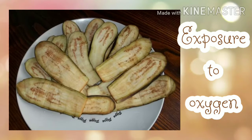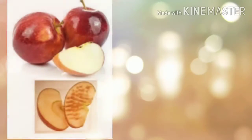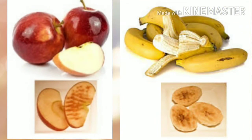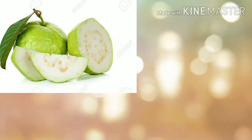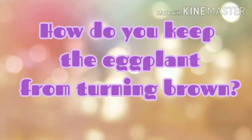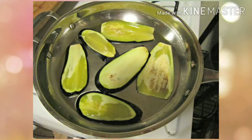The same phenomenon could also be observed in potato, apple, banana, guava, and other fruits and vegetables. How do you keep the eggplant from turning brown? Place it in a large bowl of water with a teaspoon of salt dissolved in it. The water should be enough for all the sliced eggplant to dip in fully.